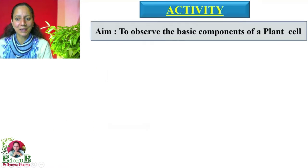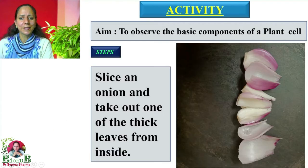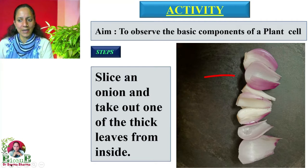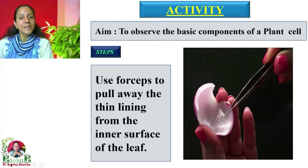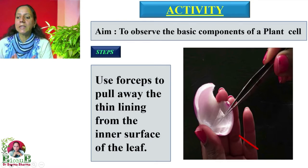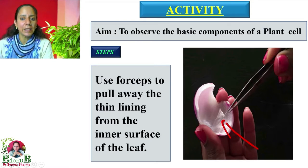Coming to the steps: Step one — slice an onion and take out one of the thick leaves from inside, as shown here. Step two — use forceps to pull away the thin lining from the inner surface of the leaf.